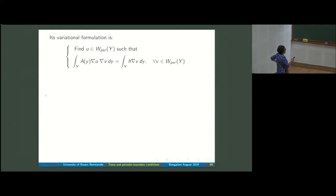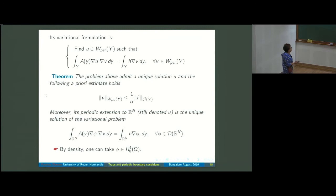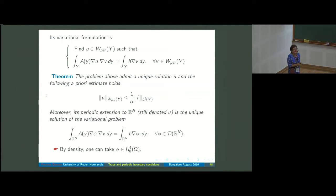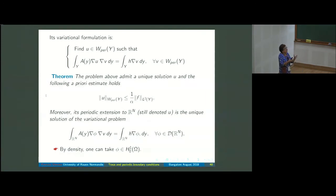Since only the gradient appears, this is also valid for H1 functions, because removing the average is a constant and makes no difference. We have a general theorem via Lax-Milgram: the problem has a unique solution with an a priori estimate. This requires working on the quotient set modulo constants, which is a bit more technical, but existence and uniqueness hold.